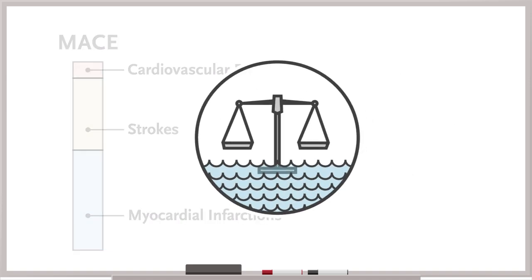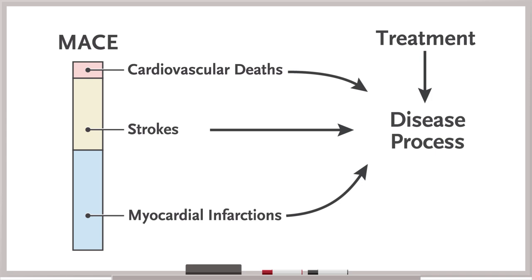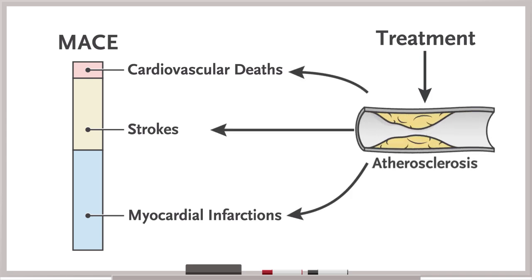So, what are the laws of the sea when it comes to composite outcomes? First, the components of the composite should reflect the disease process on which the treatment is trying to intervene. In this case, atherosclerosis is a common cause of MI, stroke, and cardiovascular death.